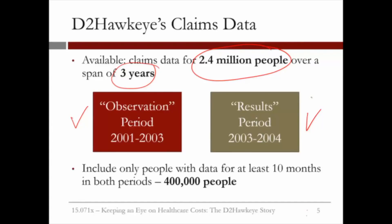Out of the 2.4 million people, we included only people with data for at least 10 months in both periods — both in the observation period and the results period. This decreased the data to 400,000 people.